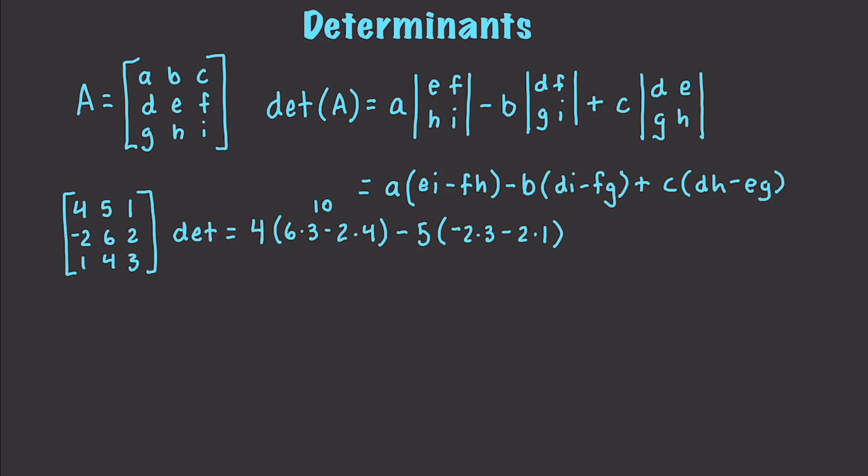Minus 5 times negative 2 times 3 minus 2 times 1. Determinants are going to make a lot of things in the past that were complicated very easy to perform or calculate. This works out to be negative 8 and negative 14. If we take 4 times 10 minus 5 times negative 8 minus 14, that is going to be equal to 66.